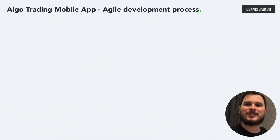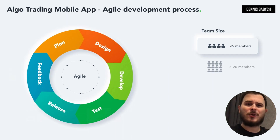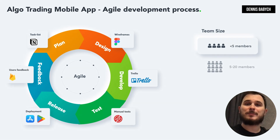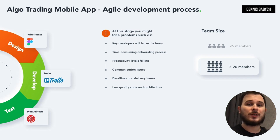Let's talk about the agile process — a great methodology that can increase your development speed and efficiency. But in some situations it can actually decrease project progress speed by up to 30%. For instance, a team of five developers who know their responsibilities, communicate effectively, and have developed most of the product can have a highly effective process using simple tools like Trello, Asana, Google Docs, and brief meetings. However, as a team expands to 15 or more people, unforeseen issues may arise, such as key developers leaving the team, onboarding becoming complicated and time-consuming, team productivity decreasing, communication problems occurring more frequently, deadlines being postponed, and the quality of code and architecture going down.